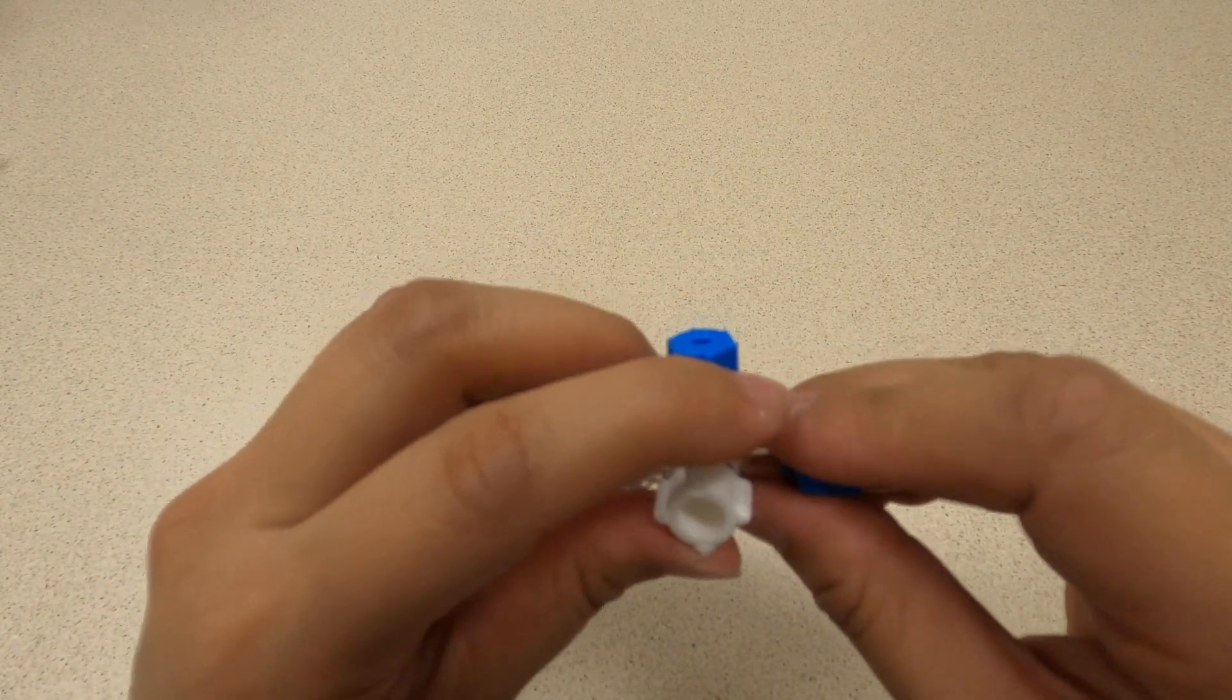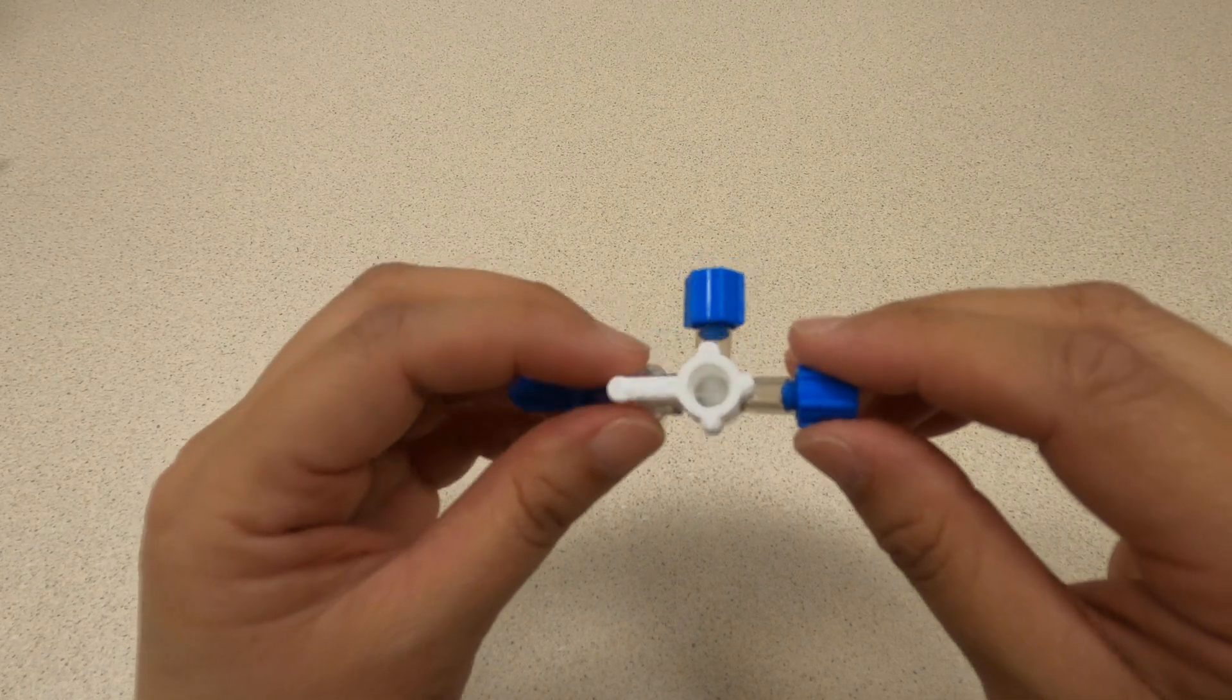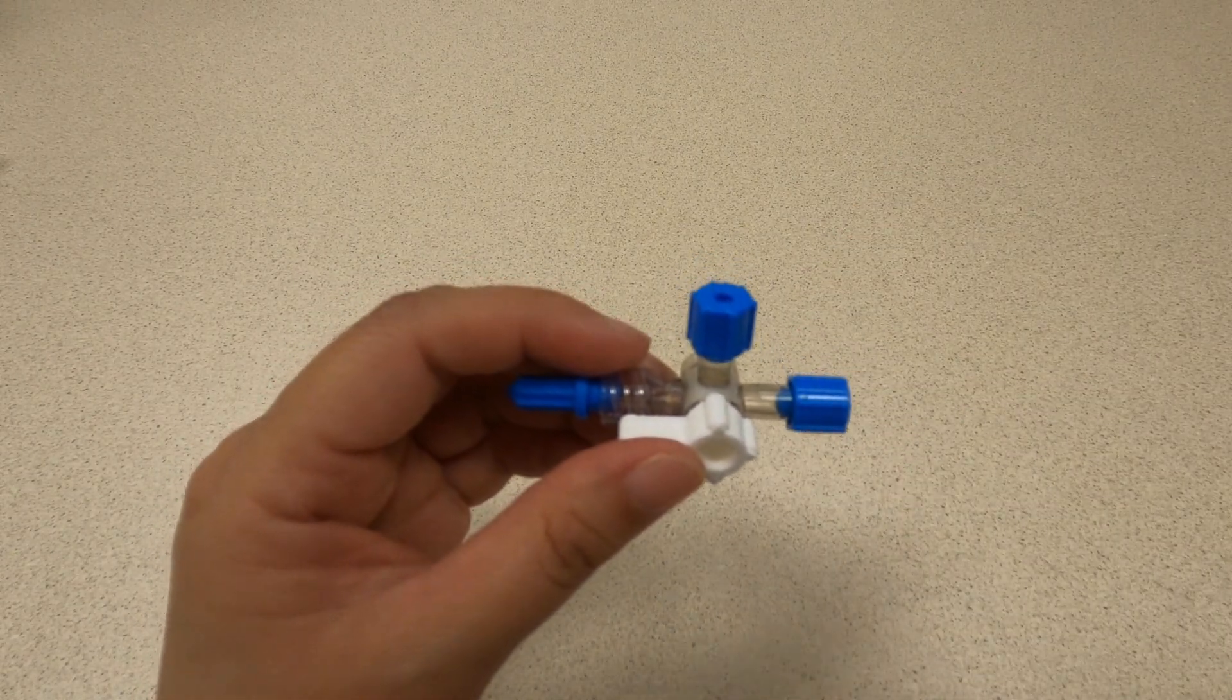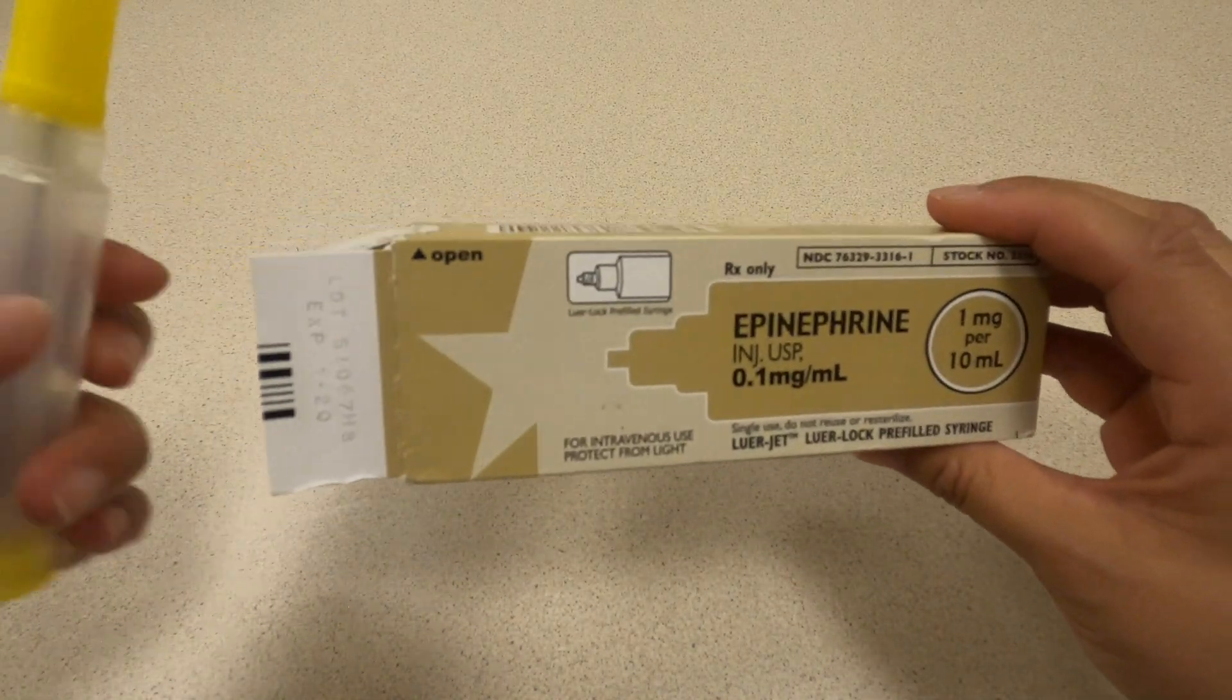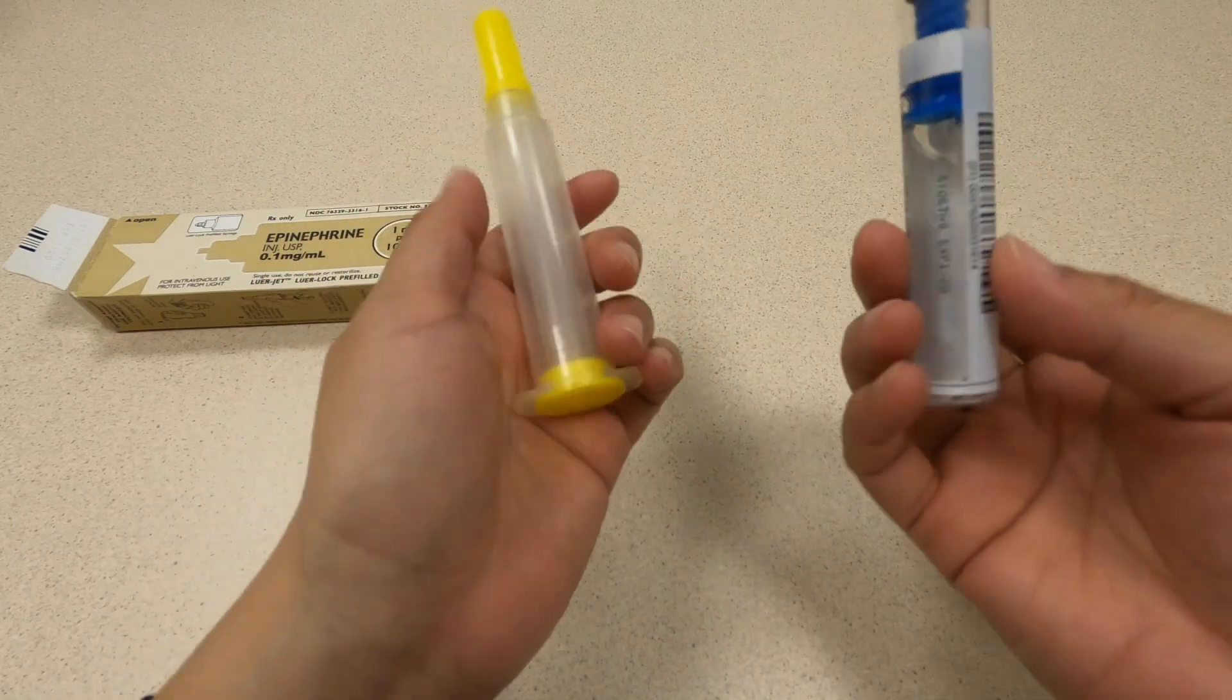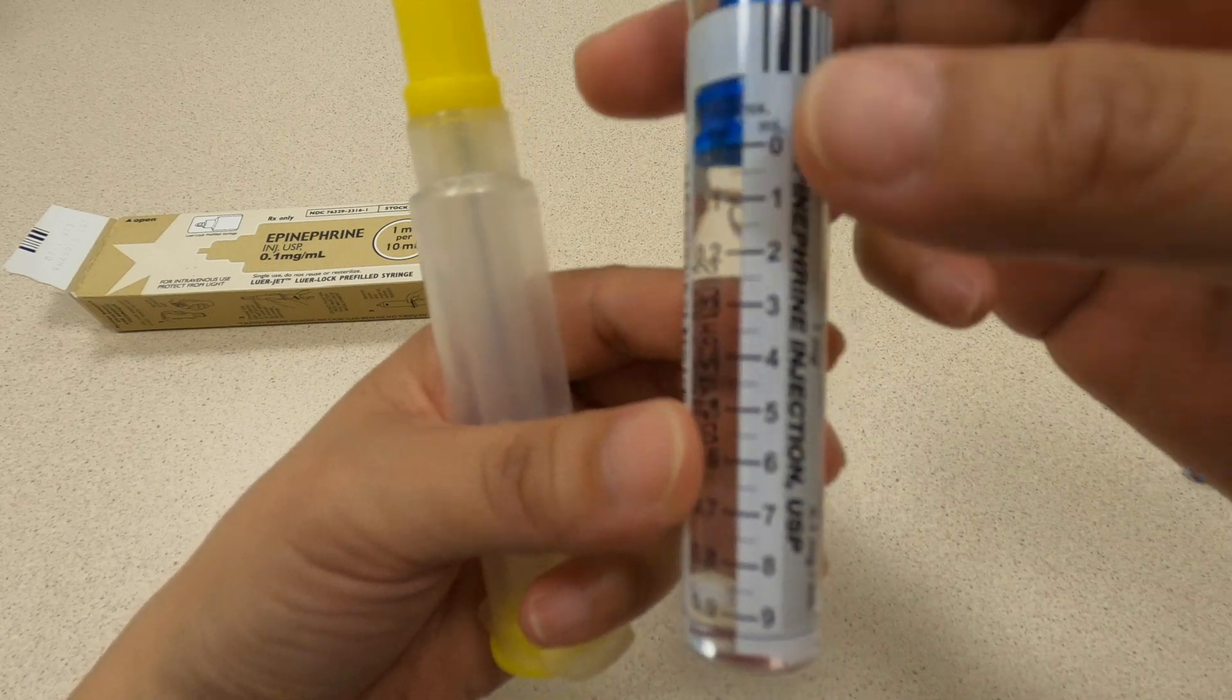We wanted to show how you use a stopcock to give adenosine and also to draw up epinephrine. The first thing is epinephrine. Many of you are probably familiar with epinephrine in this dosing, which is that it comes in this ampule. The problem with this ampule is that obviously for adults it's great, you just give the whole thing, but for pediatric patients it can be very difficult to measure out a specific dose.